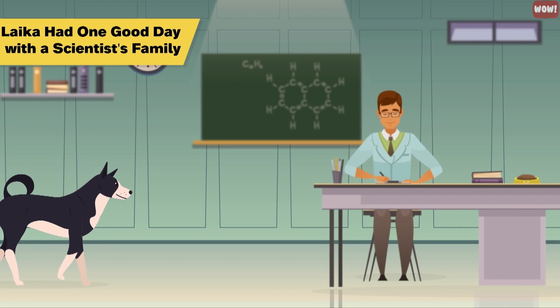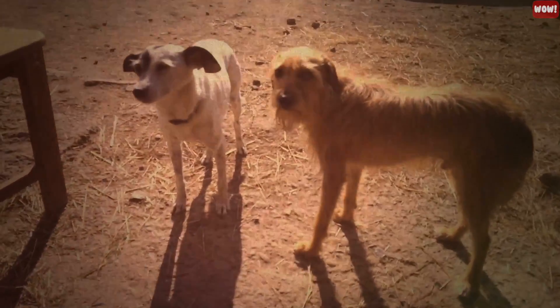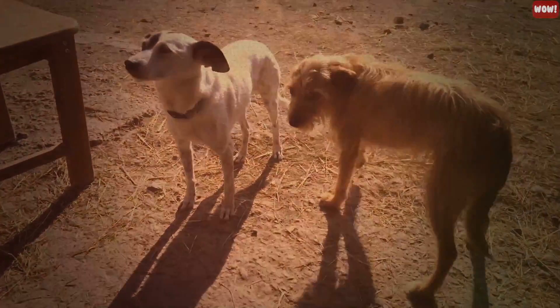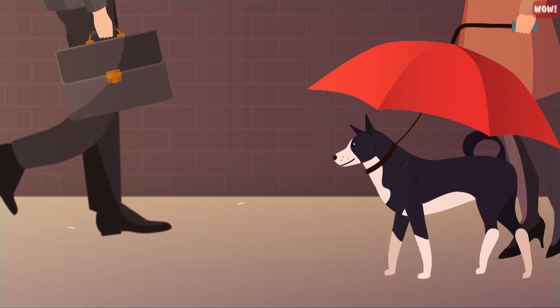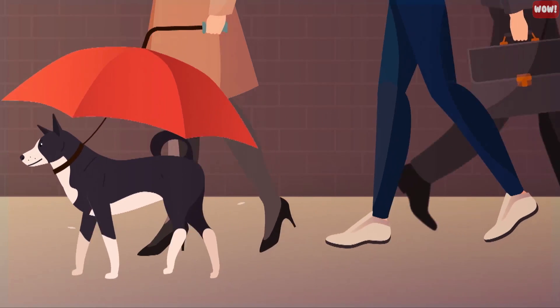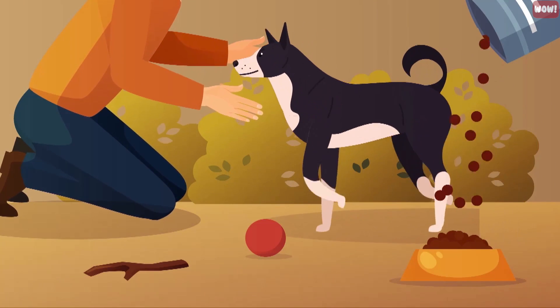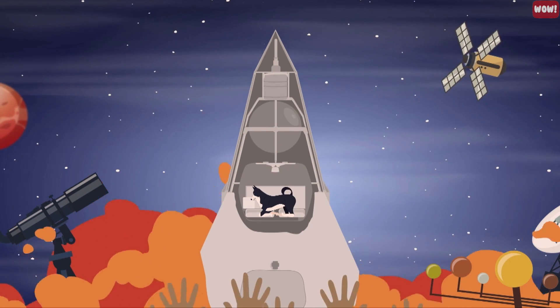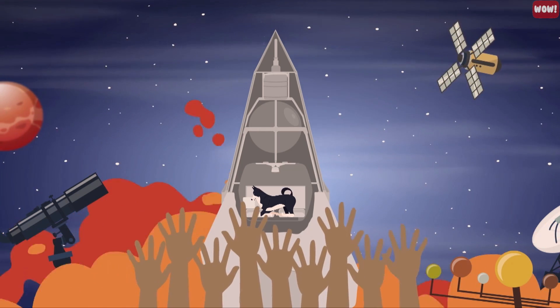Number 5: Laika had one good day with a scientist's family. Dr. Vladimir Yazdowski had been working extremely closely with Laika during the last four weeks of the training leading up to the satellite launch. Because he was the one who had plucked her off the streets, trained her, and chose her to go up into space, he wanted to do something nice for her on the day before her journey. So he brought her back to his home to let her experience what life would have been like as a domesticated dog. His family played with her, fed her, and loved her. On launch day, Dr. Vladimir Yazdowski's family came to the launch site and said their goodbyes to Laika, knowing that she would not come home.